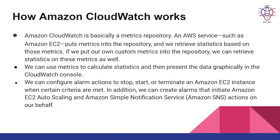How does Amazon CloudWatch work? Amazon CloudWatch is basically a metrics repository. An AWS service such as Amazon EC2 puts metrics into the repository and we retrieve statistics based on those metrics. If we put our own custom metrics into the repository, we can retrieve statistics on these metrics as well. We can use metrics to calculate statistics and then present the data graphically in the CloudWatch console.